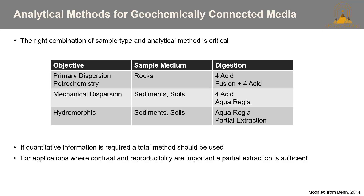To go over analytical methods for different media, it's all about the right combination of sample type and analytical method. For example, if your objective is to look at primary dispersion and petrochemistry, you'll be looking at rocks and using a 4-acid or a lithium metaborate fusion. If you're looking at mechanical dispersion in sediments and soils, you'd use a 4-acid or an aqua regia. For hydromorphic dispersion, you'd use an aqua regia and/or a partial extraction. If quantitative information is required, a total method should be used, but for applications where contrast and reproducibility are important, a partial extraction will be sufficient.